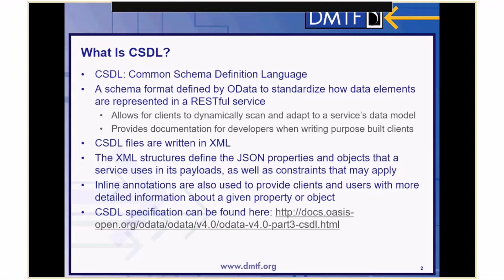CSDL files are written in XML, and the XML structures define the JSON properties and objects that a service uses in its payloads, as well as define constraints that may apply. Inline annotations are used to provide clients and users with more detailed information about a given property or object. The CSDL specification can be found on the OASIS website at the given link.